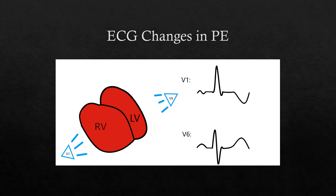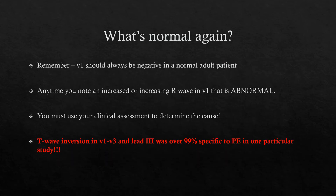If you want to get good at identifying these patterns, do 12-leads on newborns, infants, and small children, because their RVs are much closer in size to their LVs. A standard infant 12-lead ECG will present very similar to what an adult patient with an enlarged or strained right ventricle looks like. Know normal to diagnose abnormal — V1 should be negative in a normal adult, and any increased R wave in V1 is abnormal.